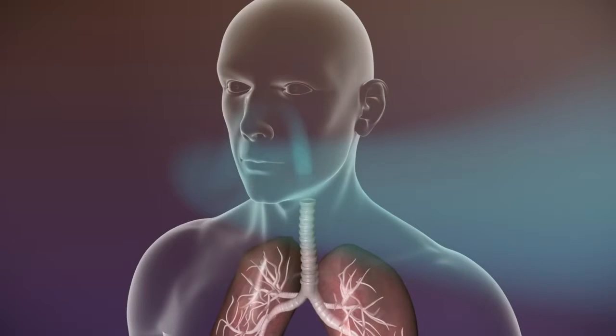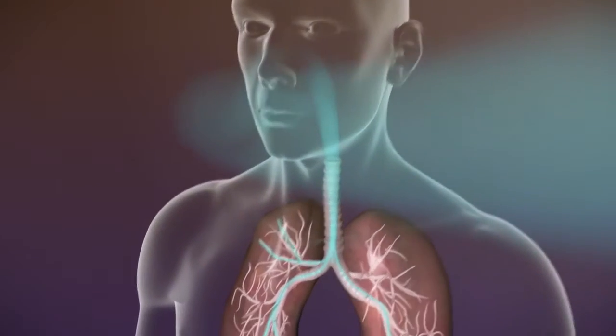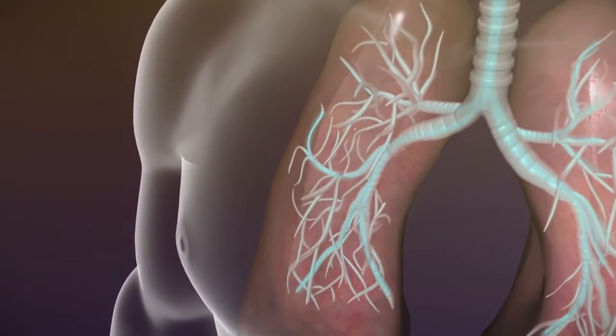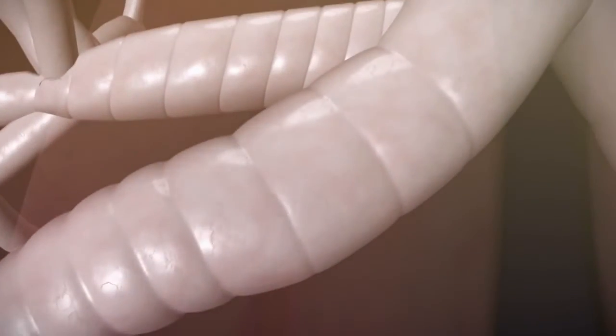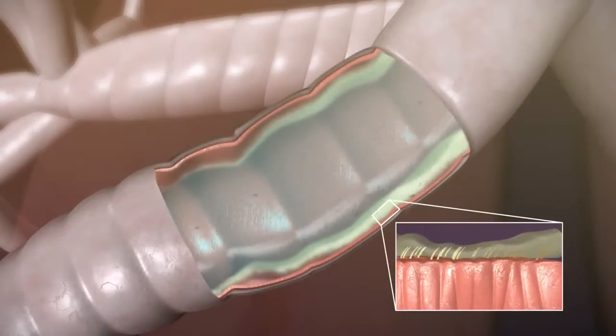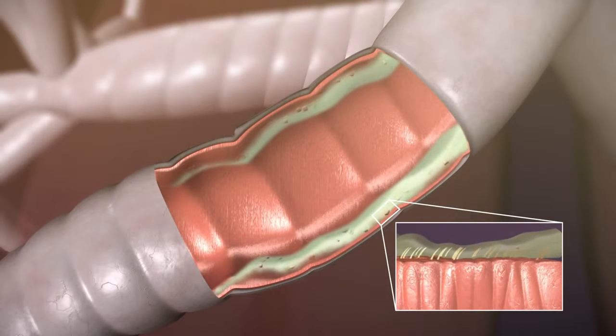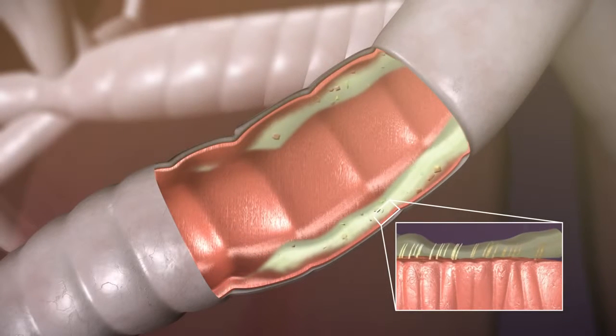In healthy lungs, mucus is produced to trap and get rid of foreign particles or bacteria that get into the lungs. Mucus is cleared from the airways by tiny hairs on the walls of the lungs called cilia, which beat back and forth to move the mucus to upper airways, where it can be coughed out.